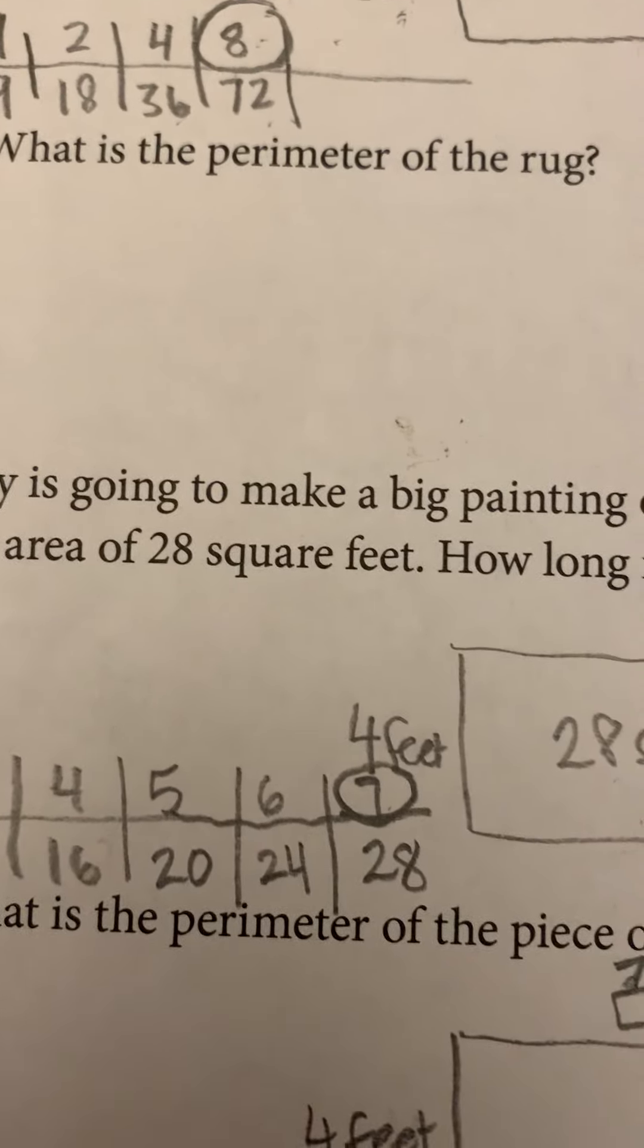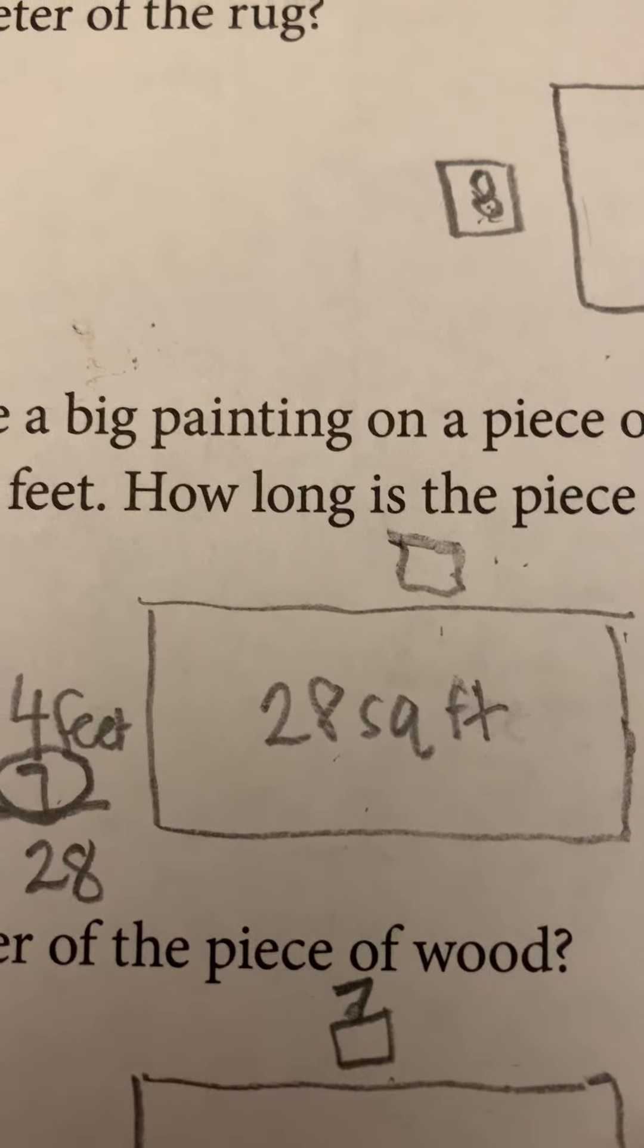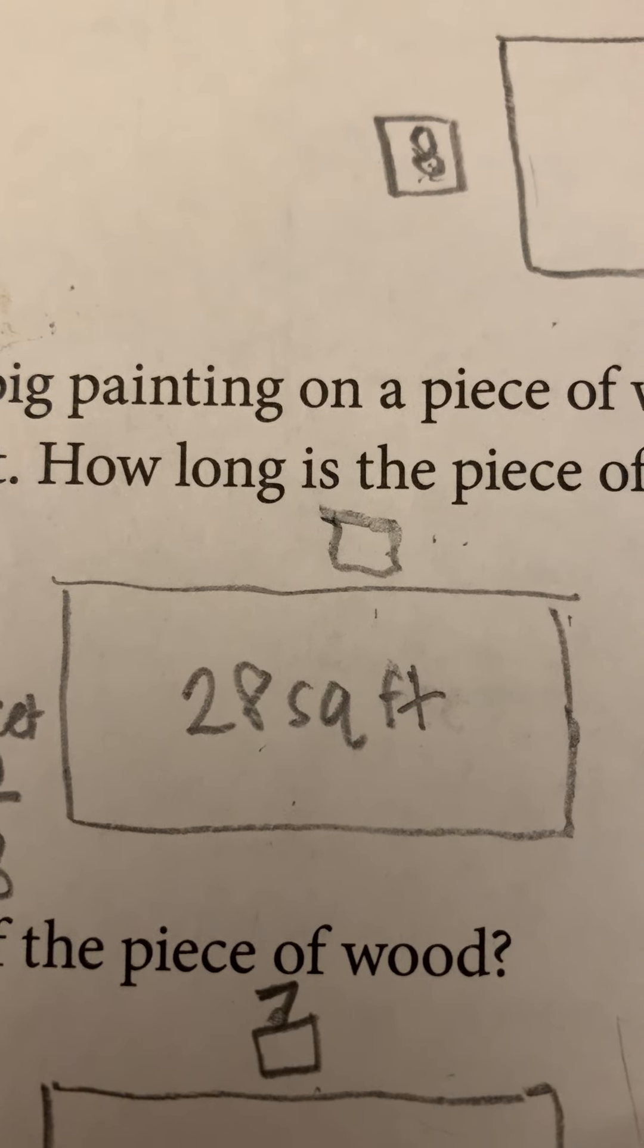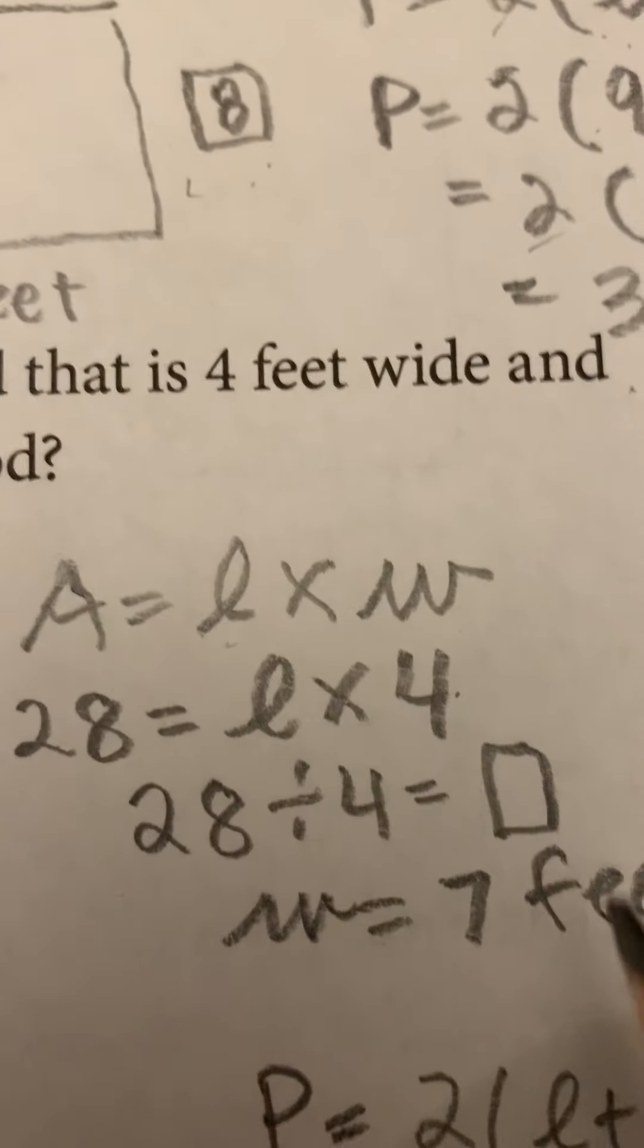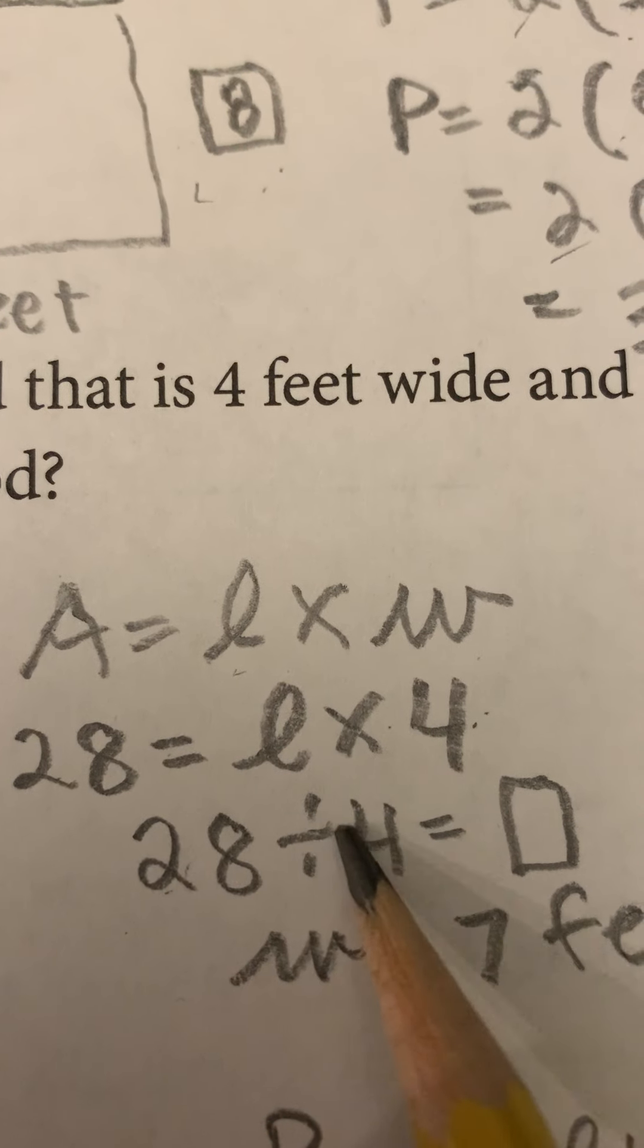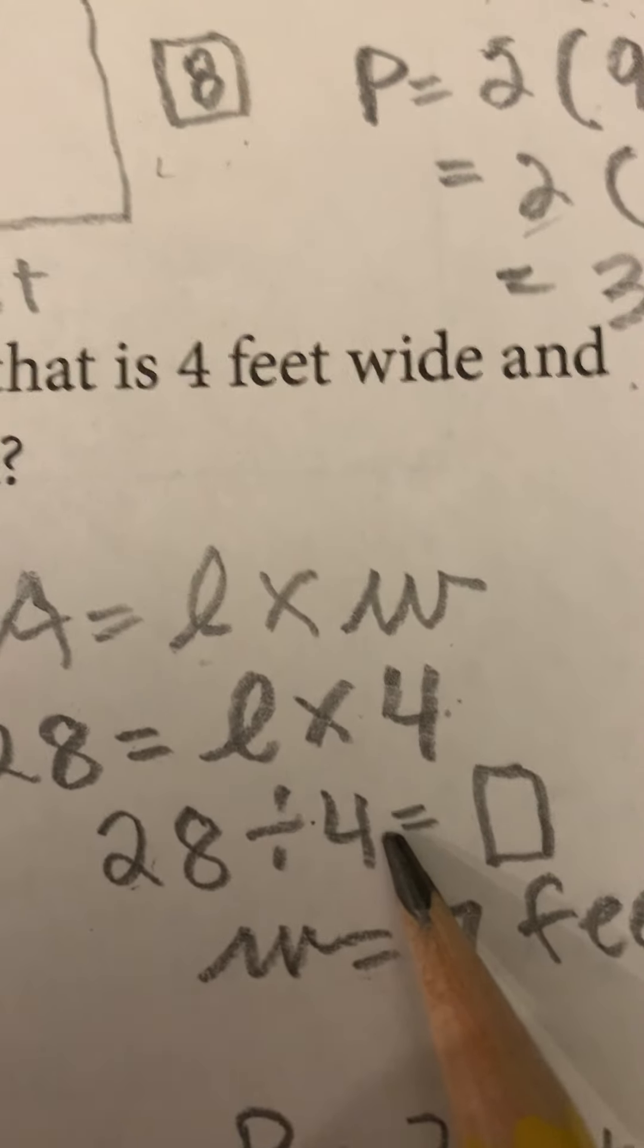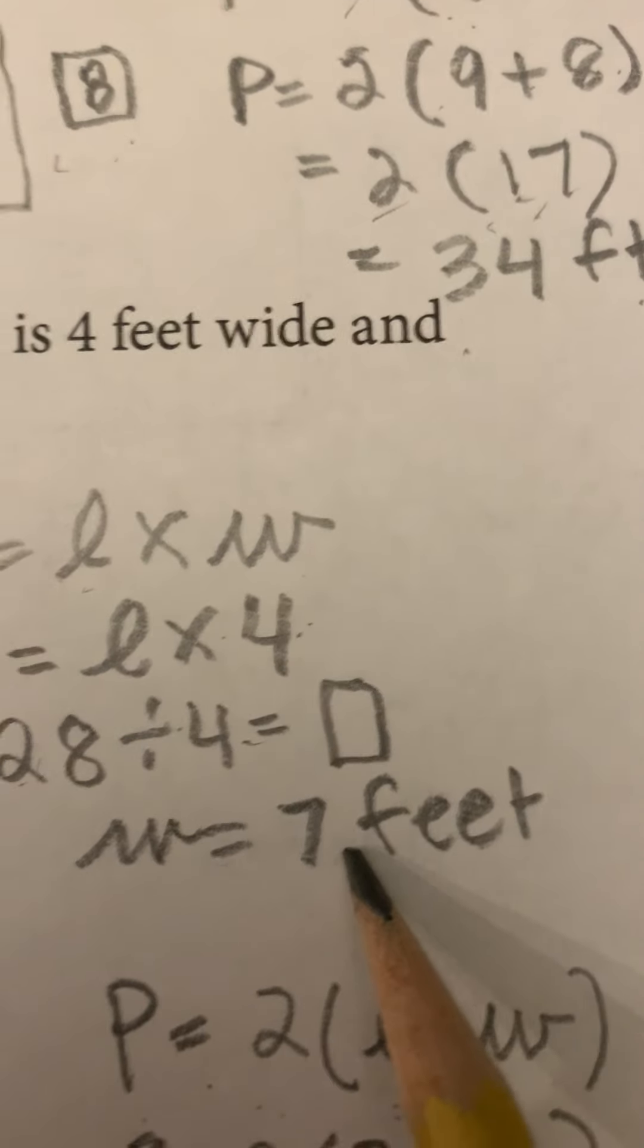Next one, she's making a big painting. I drew a picture of the painting. It was seven feet by what? And so I had to go area equals length times width. 28 equals length times four. I could do opposite operation. 28 divided by four. What times four is 28? I might've known that right away with my answer at seven feet.